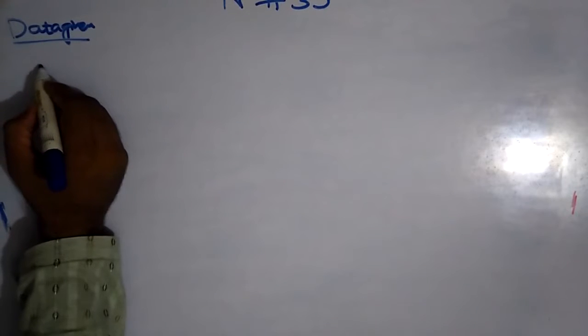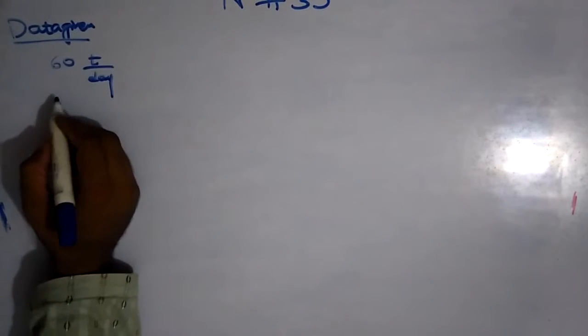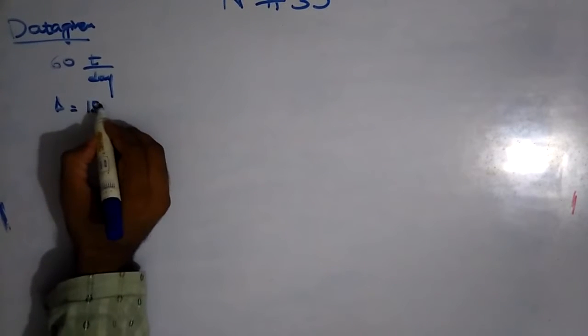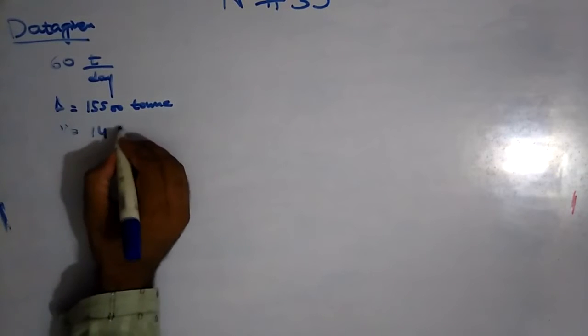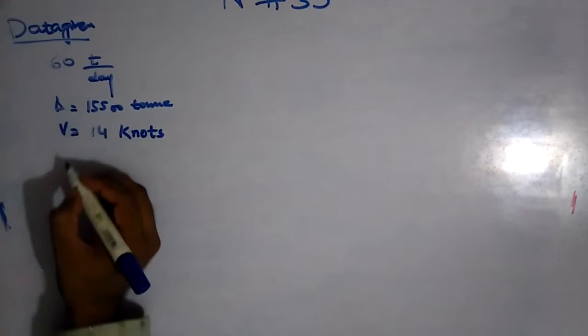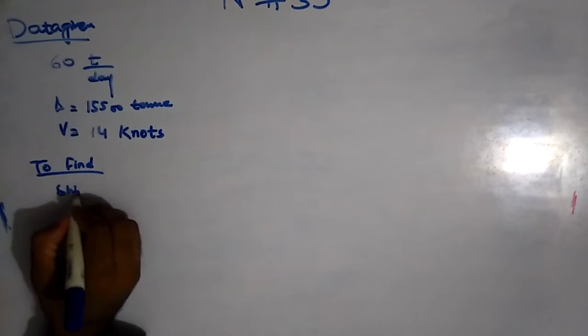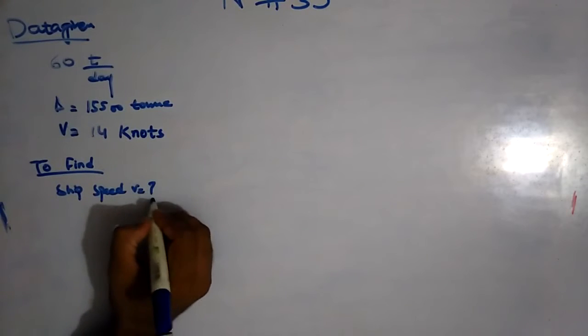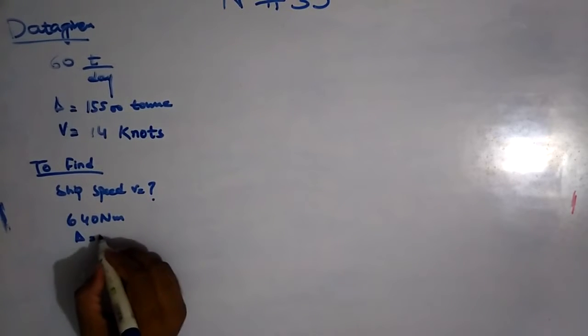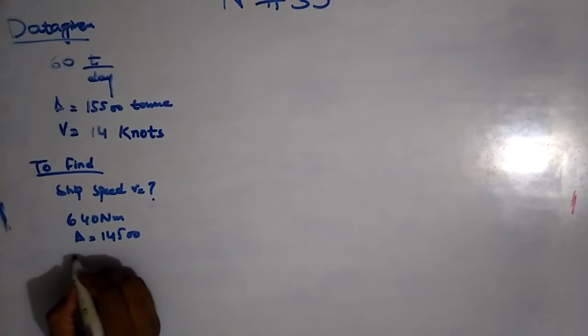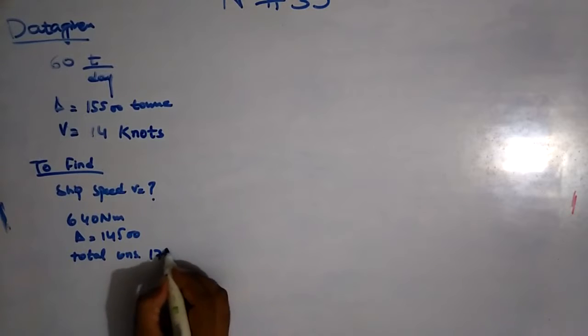A ship has a fuel consumption 60 tons per 24 hours, a day, and displacement is 15,500 tons and ship speed is 14 knots. To find is ship speed if during passage 640 nautical miles displacement is changed to 14,500 and the total fuel consumption is 175 tons.